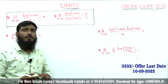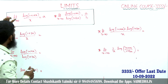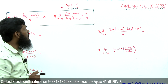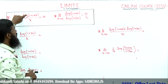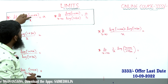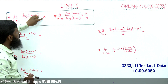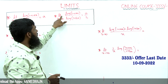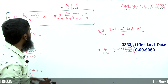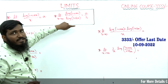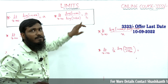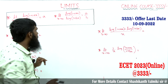Now let us see one more shortcut: limit x tends to 0, log(1 + ax) divided by x equals a. Whenever we have this logarithmic form, we simply write the coefficient a as the answer. Additionally, for limit x tends to 0, log(1 + ax) divided by log(1 + bx), we divide numerator and denominator by x, giving a over b.